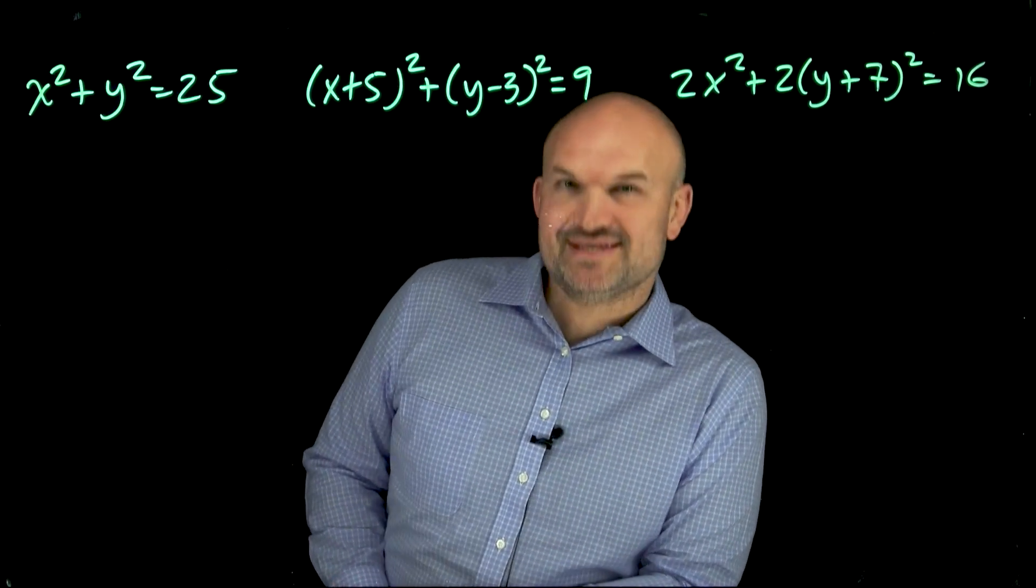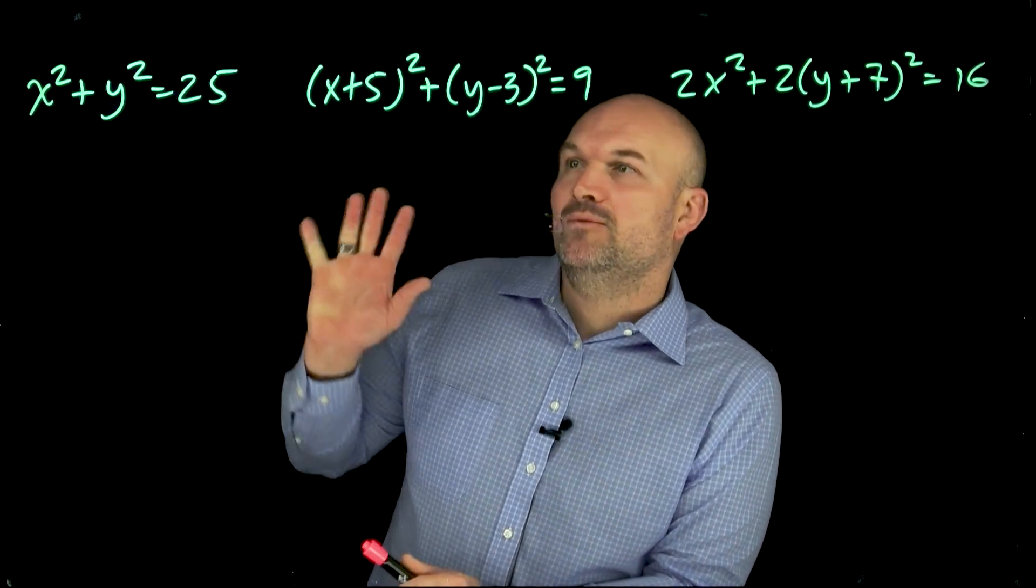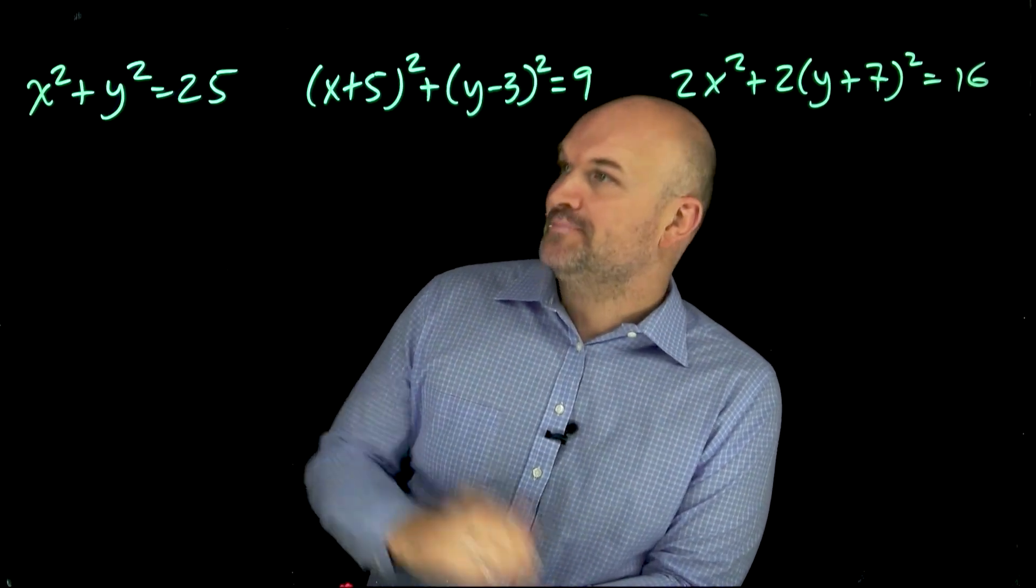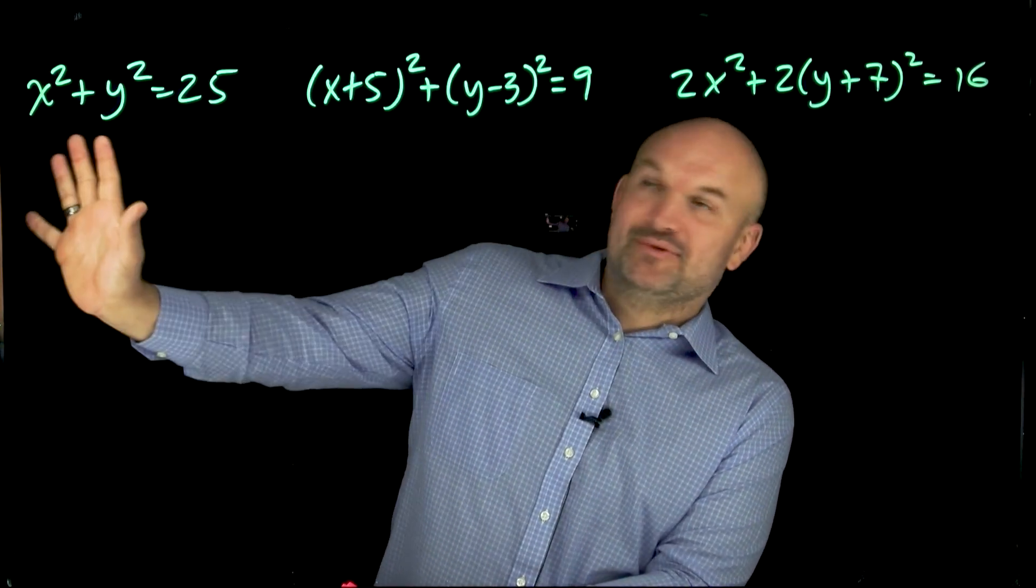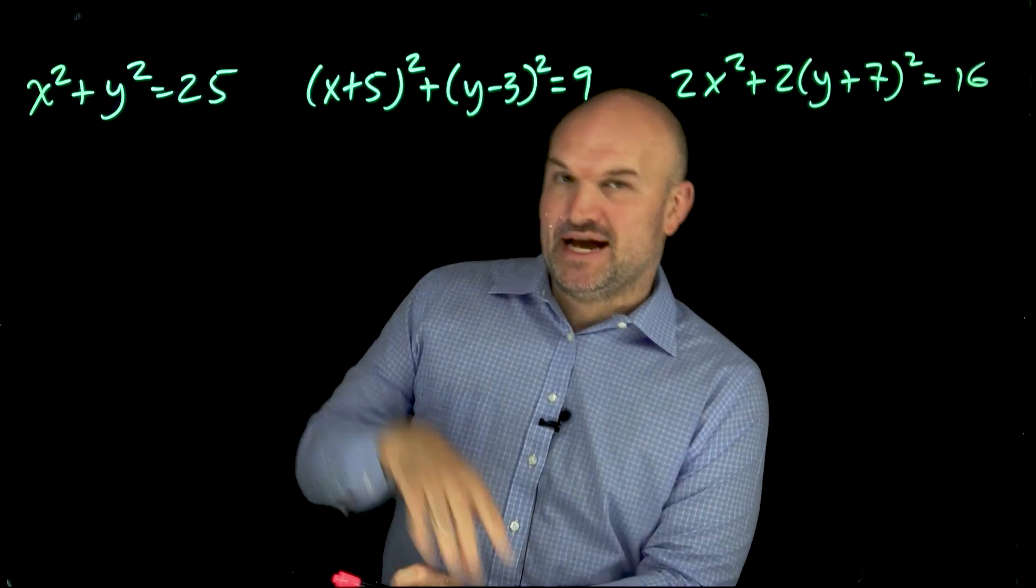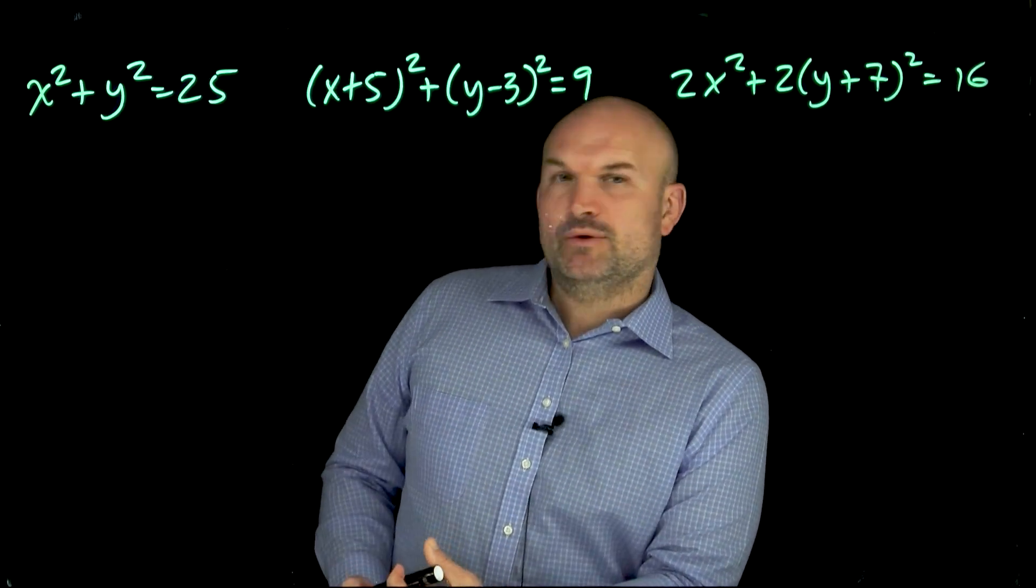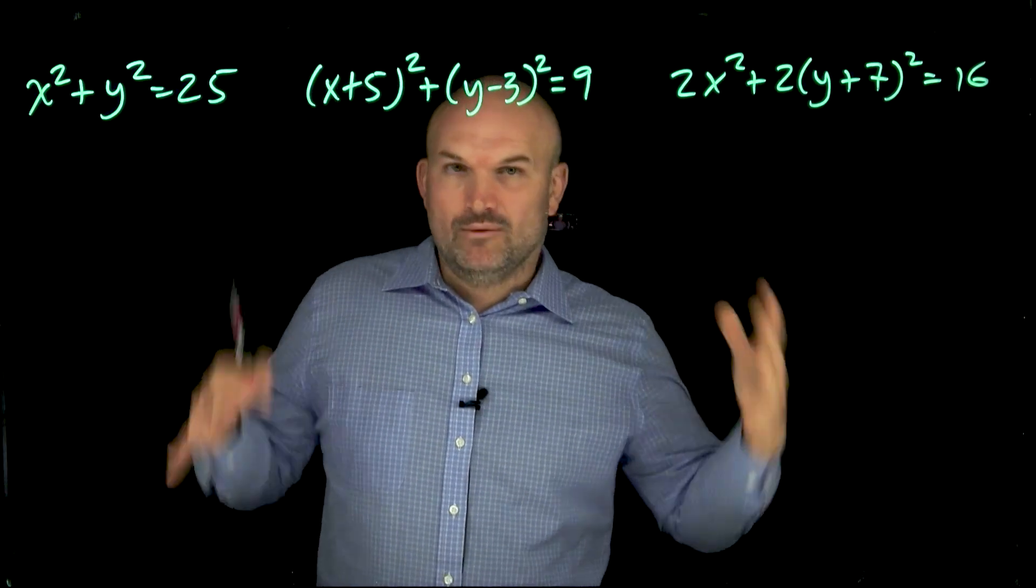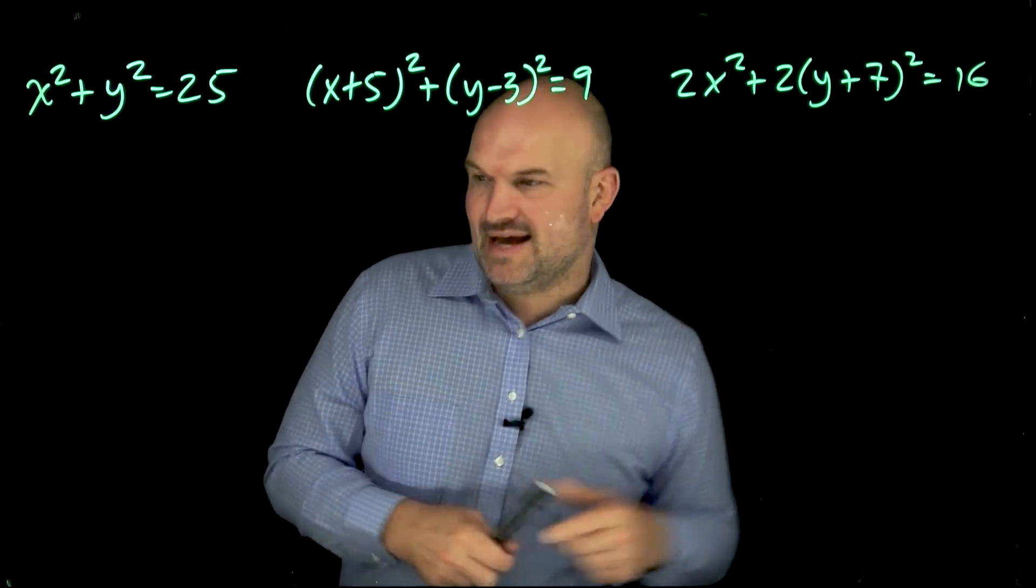Alright, let's go ahead and talk about three mistakes that students commonly make when dealing with identifying the center and the vertex of a circle. So in this equation, or in this example, we have all three equations of a circle. Now, there are two forms of equations of a circle that we need to make sure we understand so we can identify why these mistakes make sense or why they happen.